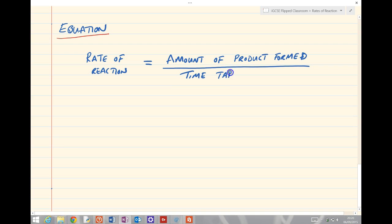Now it could be product formed, or equally it could be reactant used. So the reactant concentration, the amount of reactant, would go down with time. Or if we were talking about product, the amount of product would go up with time. Either one is perfectly acceptable.